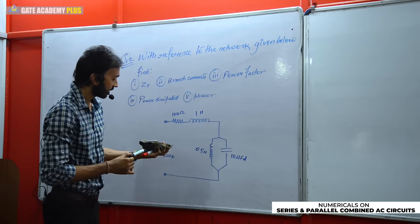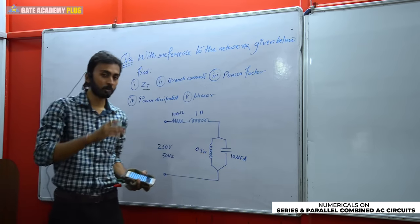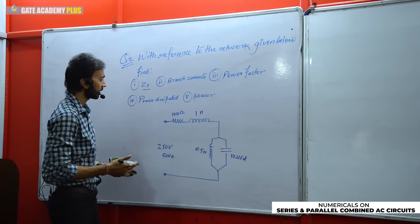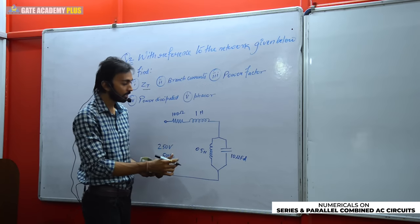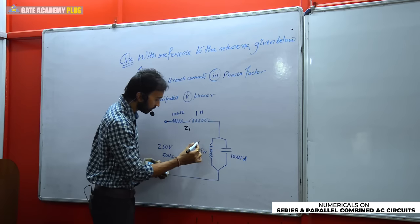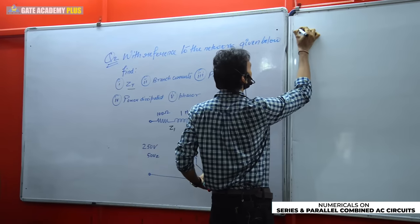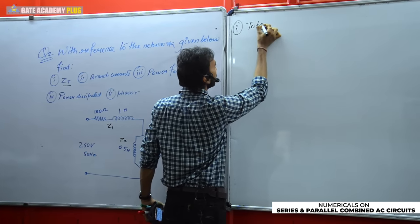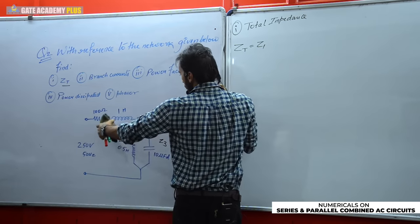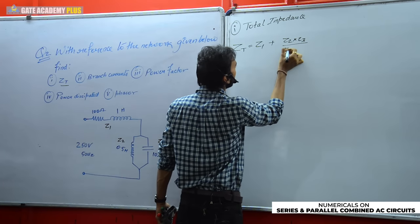Let's approach this step by step. First, identify branches: Z1 (branch 1), Z2 (branch 2), Z3 (branch 3). For total impedance: Z_total = Z1 + (Z2 × Z3)/(Z2 + Z3), since Z1 is in series with the parallel combination of Z2 and Z3. To compute branch impedances, we need reactance values — so we convert inductances and capacitance to reactances.